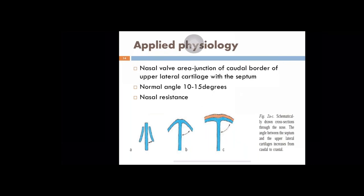Coming to the applied physiology of the nose as far as the septum is concerned, there is a very important area in the antero-inferior part of the nose called the nasal valve angle, or nasal valve area. It is a junction between the caudal end of the nasal septum and the caudal end of the upper lateral cartilages. The normal angle of the nasal valve is 10 to 15 degrees. When the valve angle is acute — less than 10 to 15 degrees — it leads to increased resistance in airflow to the nose, causing nasal obstruction.